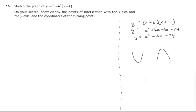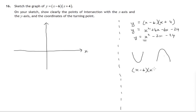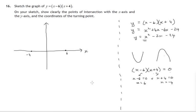Where does it cross the x-axis? Well, on the x-axis, y is 0. So we need to find the intersections with the x-axis by finding when that expression equals 0. This times this being 0 means one or other of these two expressions will equal 0. If x minus 6 is 0, then x equals 6. If x plus 4 is 0, then x equals negative 4. So the two points of intersection with the x-axis are (6, 0) and (-4, 0).